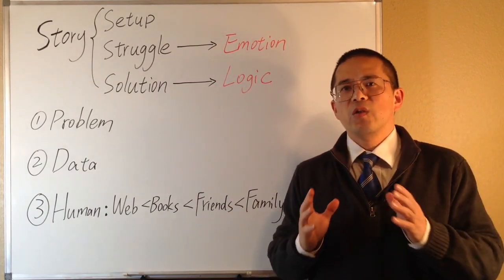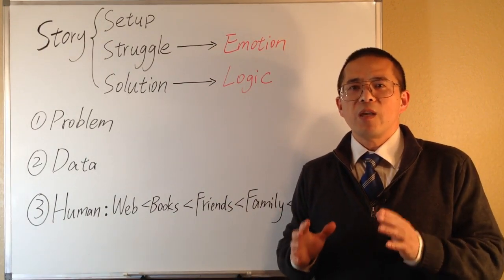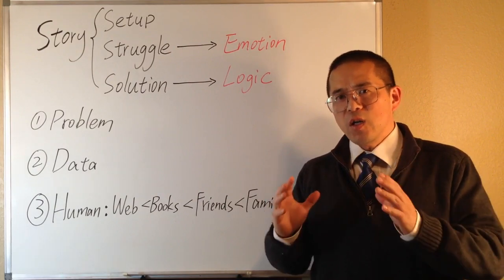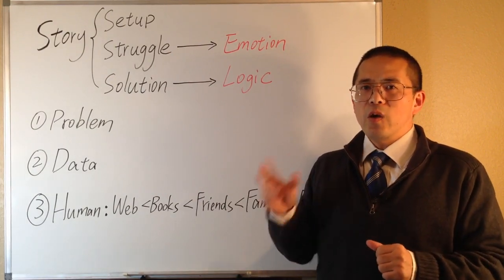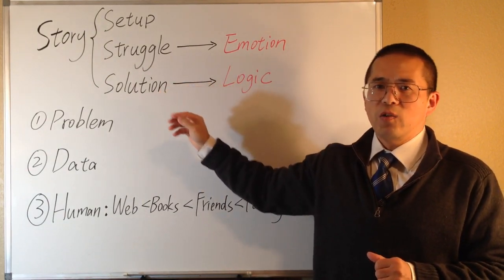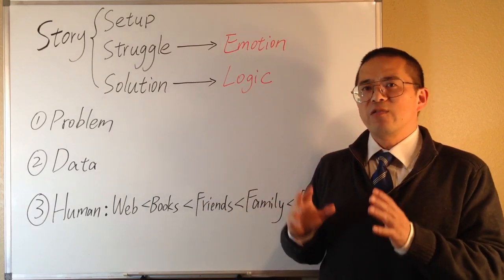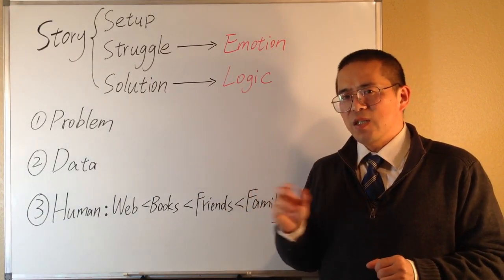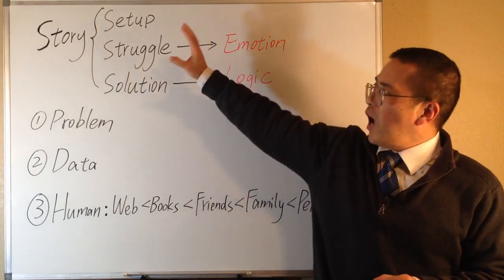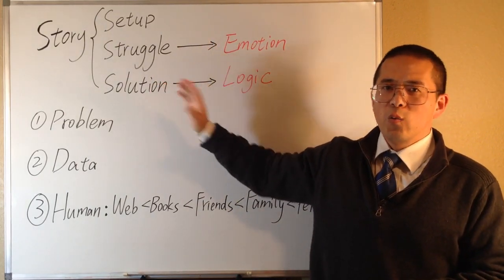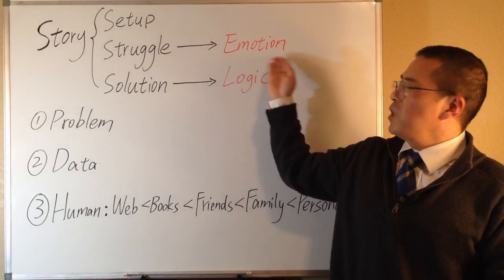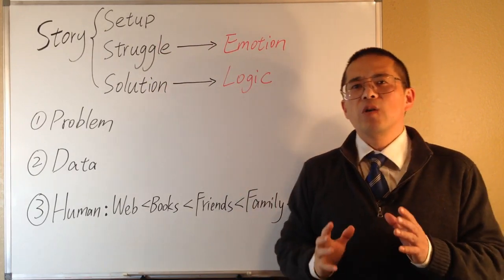Maybe something happens to the main characters. Maybe the main characters want something, but they cannot get it. So they have this struggle. If we are able to hook our audience with the Struggle, then we will be able to impress our audience with the Solution at the end of the story. A good story should have a solution that is not easily predictable, but is reasonable and logical. That is how a typical story flows — we have the Setup, the Struggle, and the Solution — so we have both emotion and logic to make our story memorable.